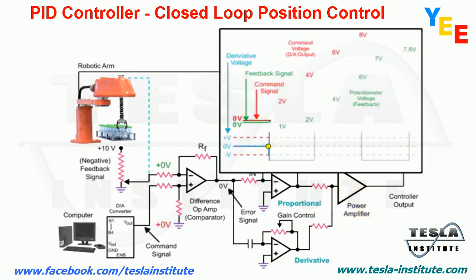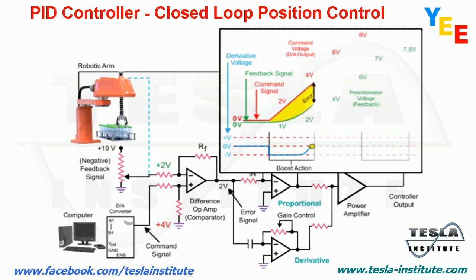The error becomes constant when the voltage from the potentiometer indicates that the robotic arm position is changing at a constant rate of the command signal. At this time, the derivative voltage changes to zero volts and the proportional amplifier continues to produce a voltage.